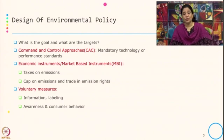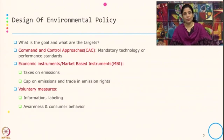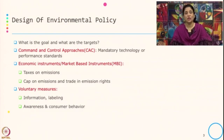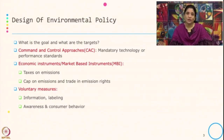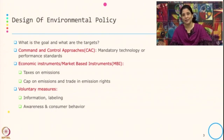Command and control approach is also typically known as a traditional approach — one of the first approaches in environmental regulation — which prescribes mandatory technology and performance standards to the organization. The second type of policy instrument is the economic instrument or the market based instrument.